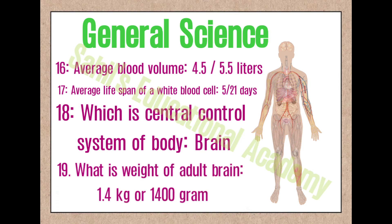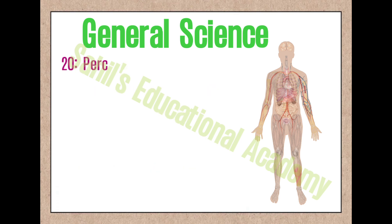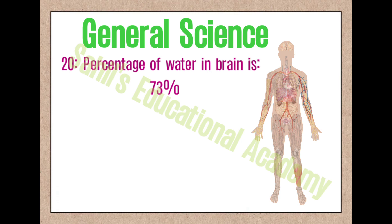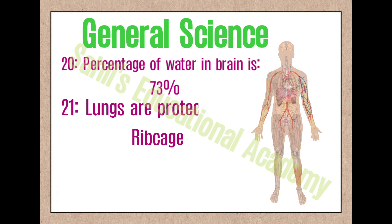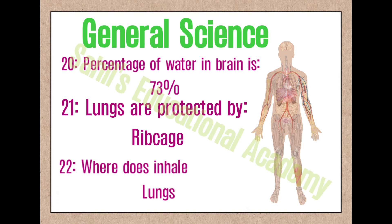19. What is the weight of the adult brain? 1.4 kilograms or 1400 grams. 20. Percentage of water in brain is 73%. 21. Lungs are protected by the ribcage. 22. Where does inhaled air enter? Lungs.